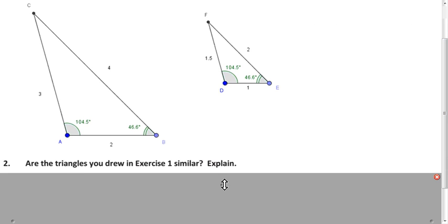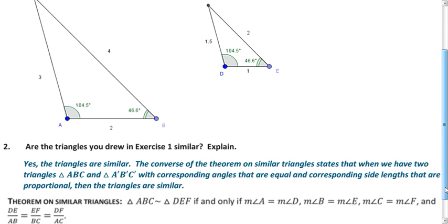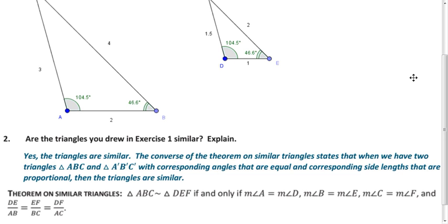So what do we know about this? Are they similar? We learned in the previous lesson about the theorem on similar triangles. And since we have corresponding angles congruent or equal in measure and corresponding side lengths are proportional, these are similar triangles.